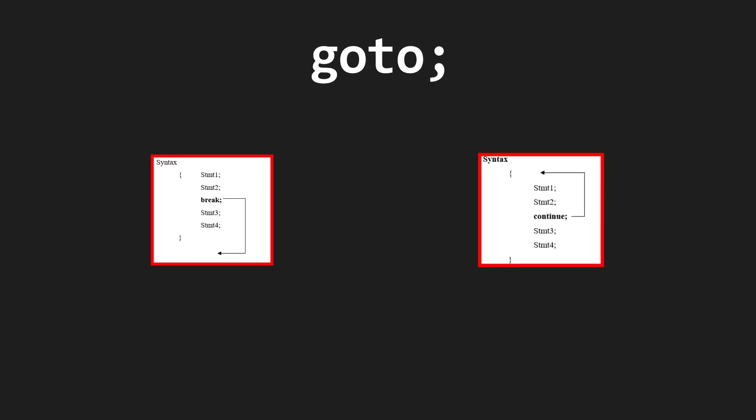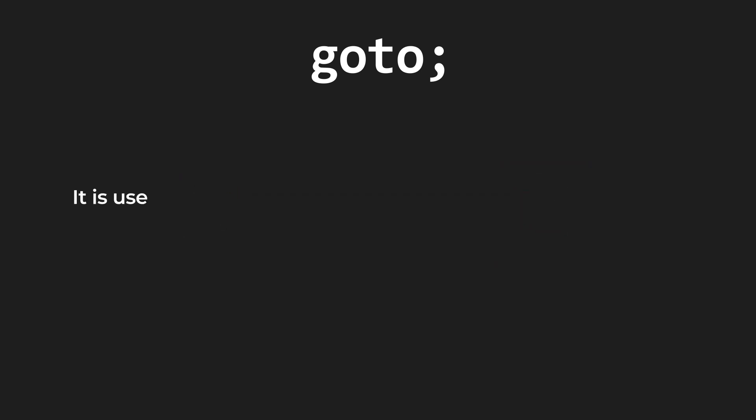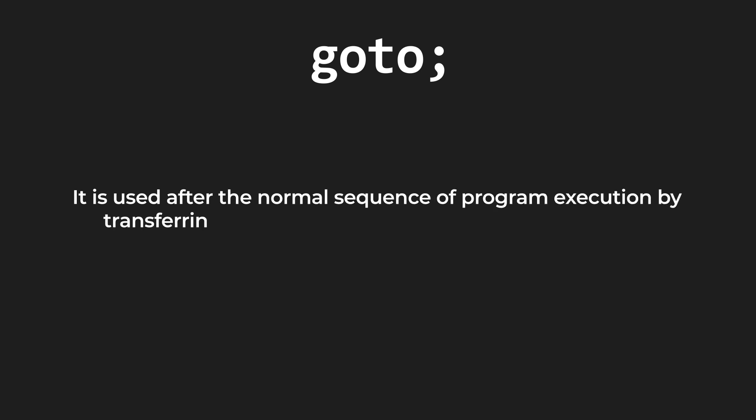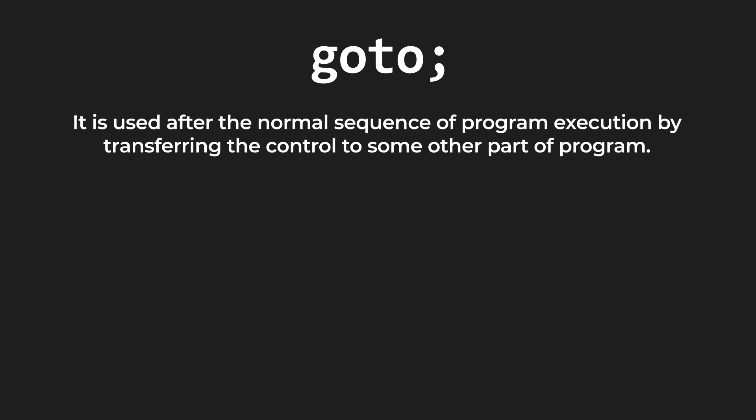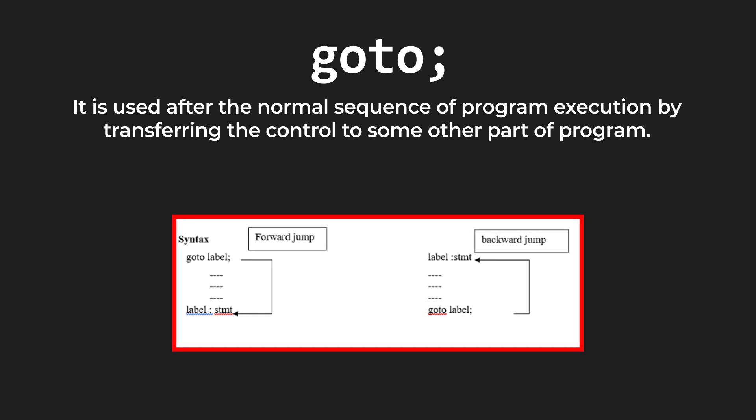The last unconditional statement is goto. Unlike continue and break which shift control to the start of a block or outside the block, the goto statement is used to shift the control to a particular statement in the program. We can also say that goto alters the normal sequence of program execution by transferring control to some other part of the program. The syntax shows two options: a forward jump or a backward jump. You write the keyword goto followed by a label, then write the target statement with the same label followed by a colon.